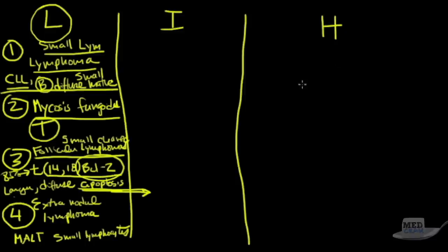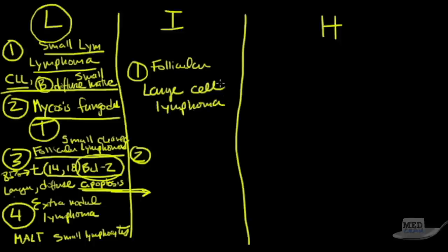What about intermediate? There's only two I want to talk about in terms of intermediate. One of them is a follicular large cell lymphoma. Typically that can occur from these smaller ones that turn out to be larger from this 14;18 translocation. So you can get an intermediate grade follicular large cell lymphoma with large cells.